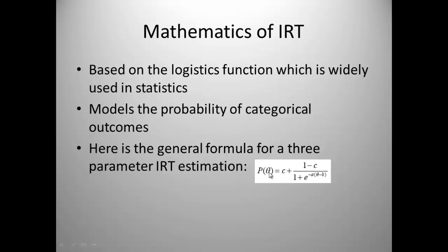And then that is multiplied times the person's ability. That's over here in theta minus the difficulty of the item. So, that's essentially the general formula for IRT estimation. And that is for a three-parameter IRT estimation where you only have two response options.